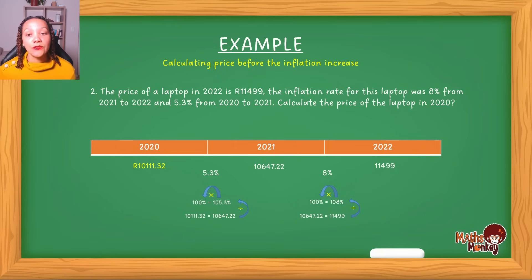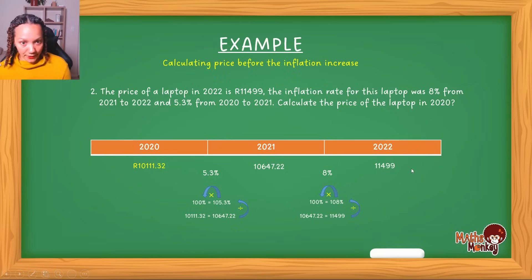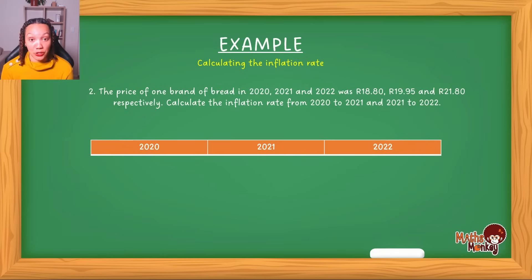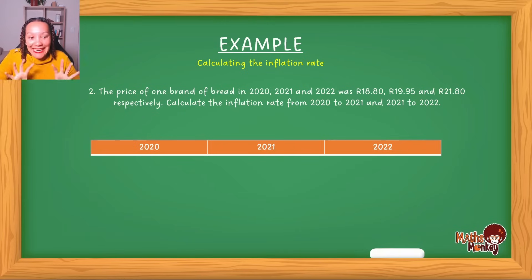In example one we moved from an earlier year to a later year. In example two we moved from the later year to the earlier year. In example three we are now going to look at calculating the inflation rate — the actual percentage between the two years. In the previous examples we were given the percentages, and now we are asked to calculate what the inflation rate actually was. When the question says 'rate,' it means what is the percentage.